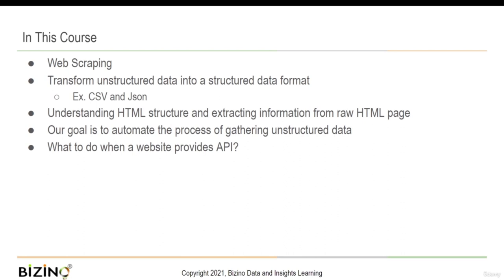One might say you could use APIs. Some websites provide APIs to extract information from their sites, which is good. If an API is available, you should always use that. But what do you do if a website does not have an API? This is where a web scraper comes into play to extract information from such websites.